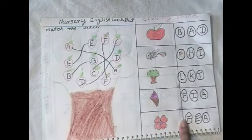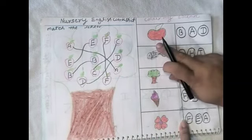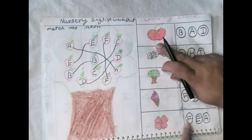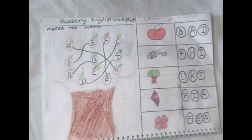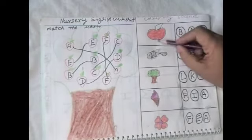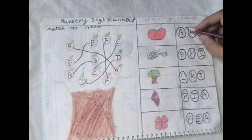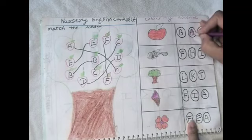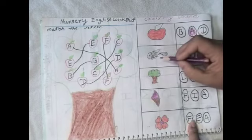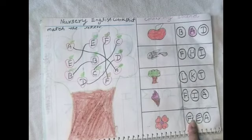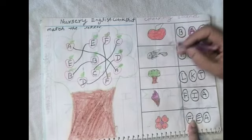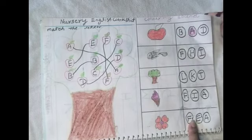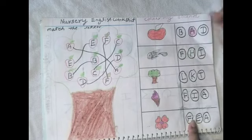My sound. What is this? Apple. A for apple. The sound is A, A, A, apple. Next, fish. Where is fish? Fish sound F, F for fish.